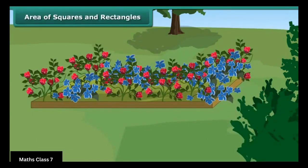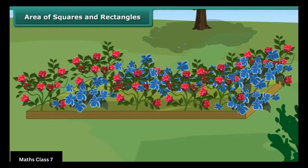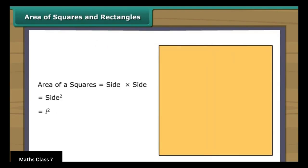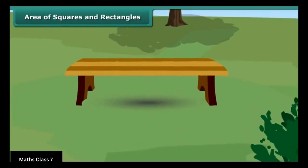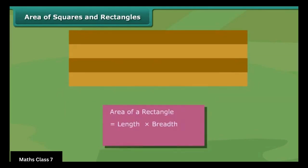Area of squares and rectangles. Students, can you identify the shape of the flower bed in the park? It is the shape of a square. A square is a four-sided closed figure with equal measures. Can we find the area inside the flower bed? Yes. If we have the measure of any one side, we can find the area. The area of a square is the square of its side. The shape of the bench in the park is a rectangle on the sitting top portion. The area of a rectangle is the product of its length and breadth.